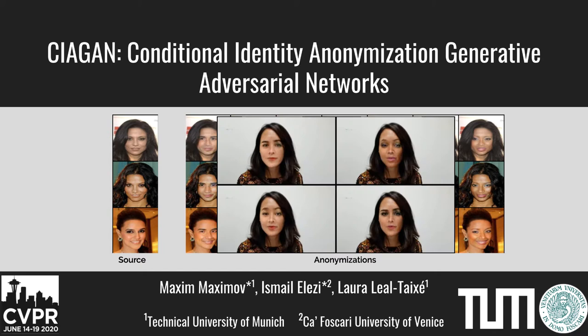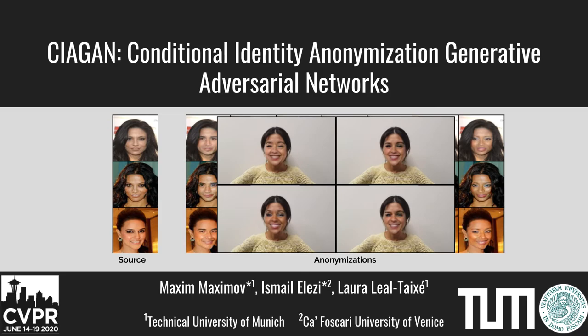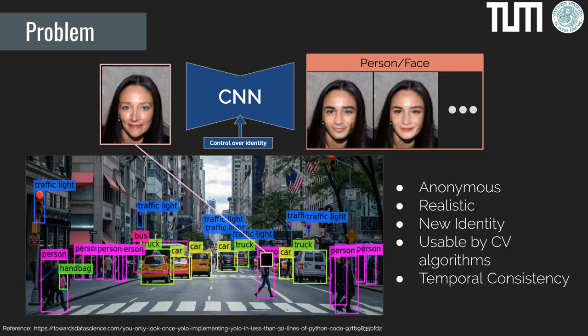We want to be able to use video footage to understand the scene around us, and autonomous cars should too. In order not to invade people's privacy, we have developed a method that detects sensitive content, such as a face, and privatizes it to generate an anonymous, realistic version of it, depicting an identity that does not exist.